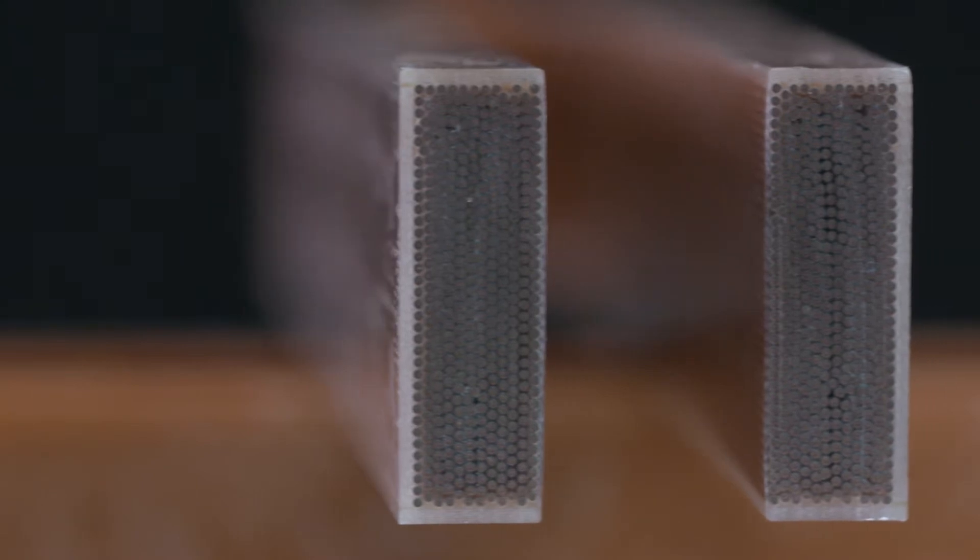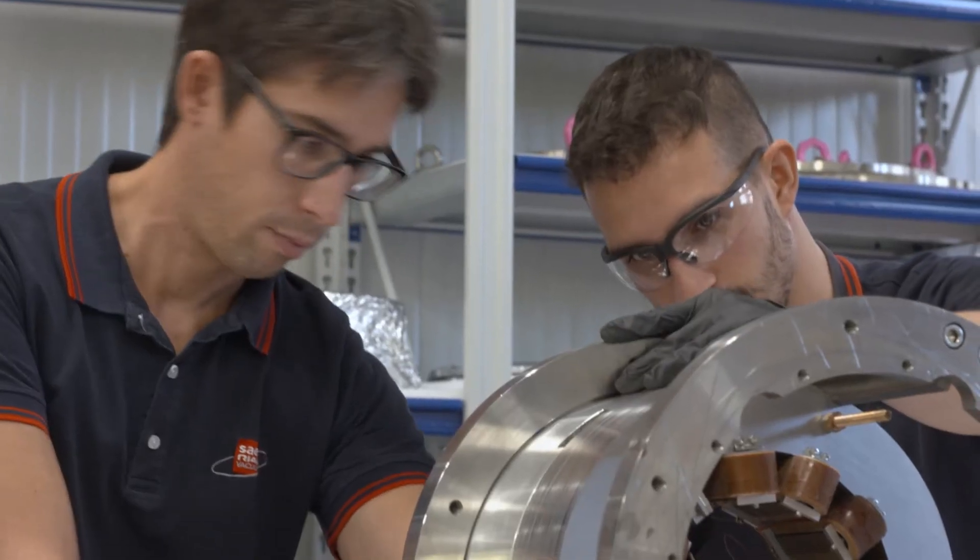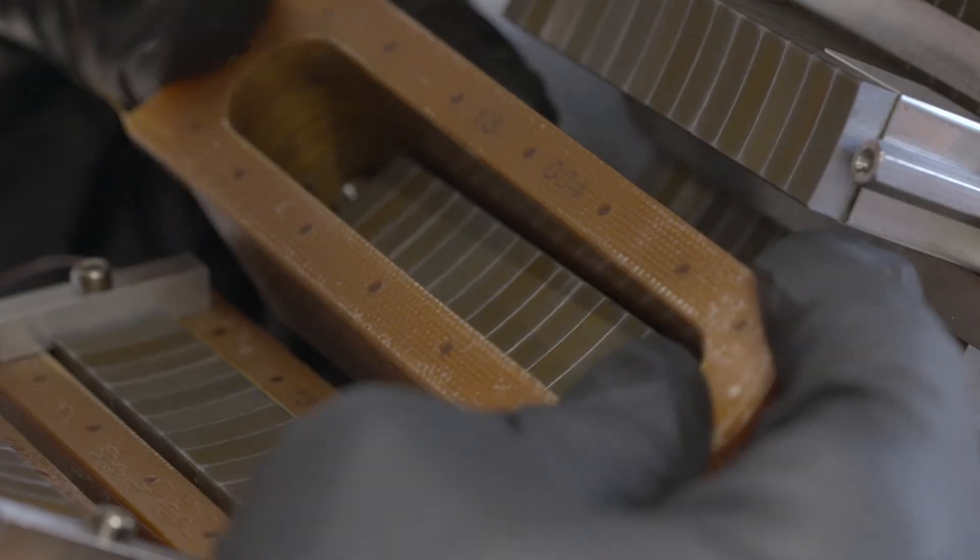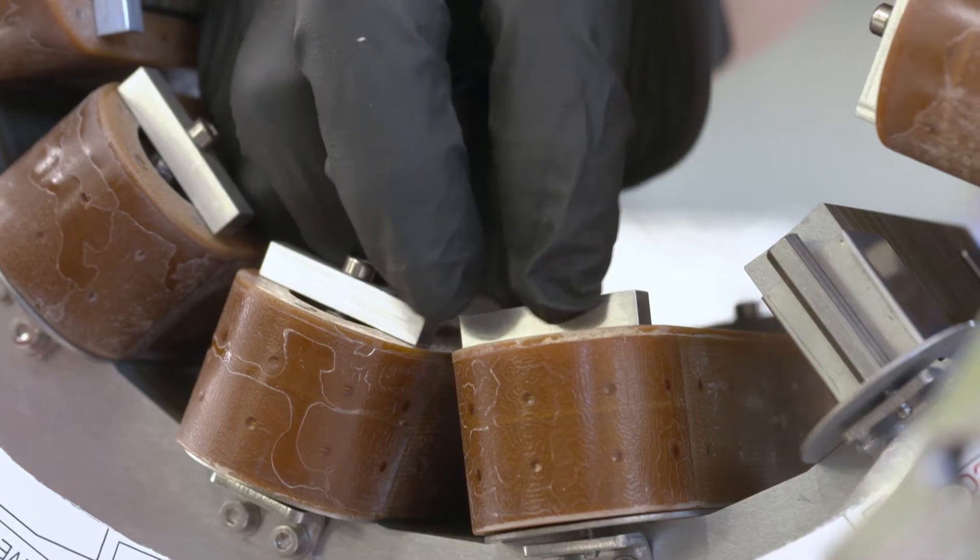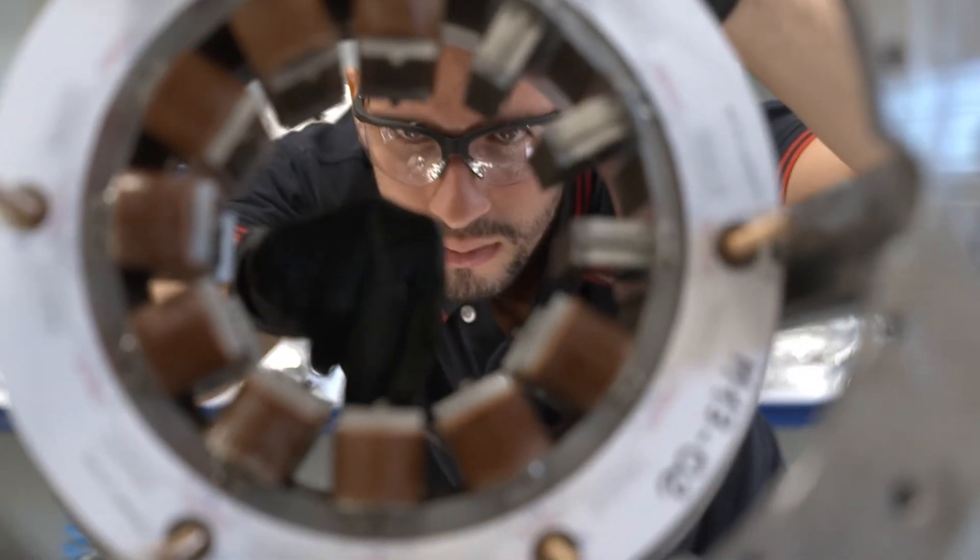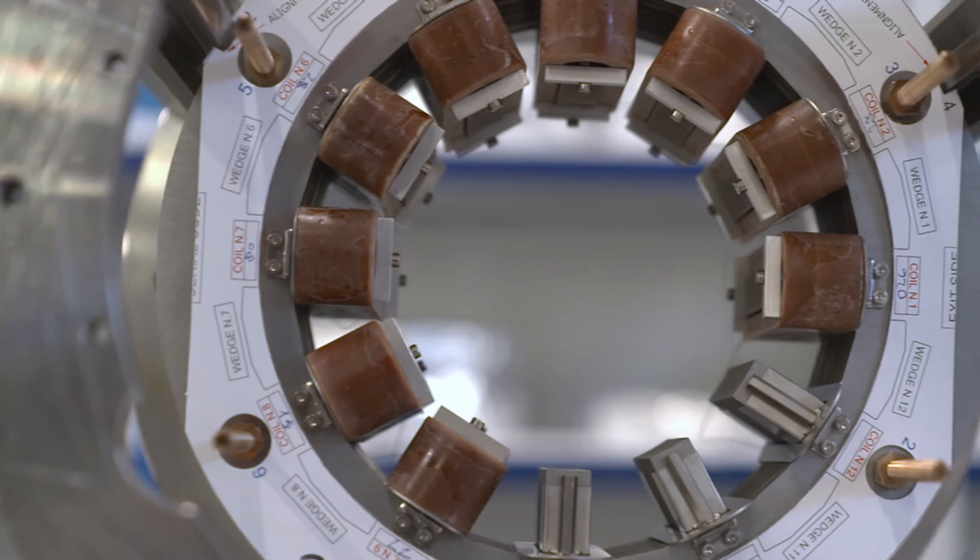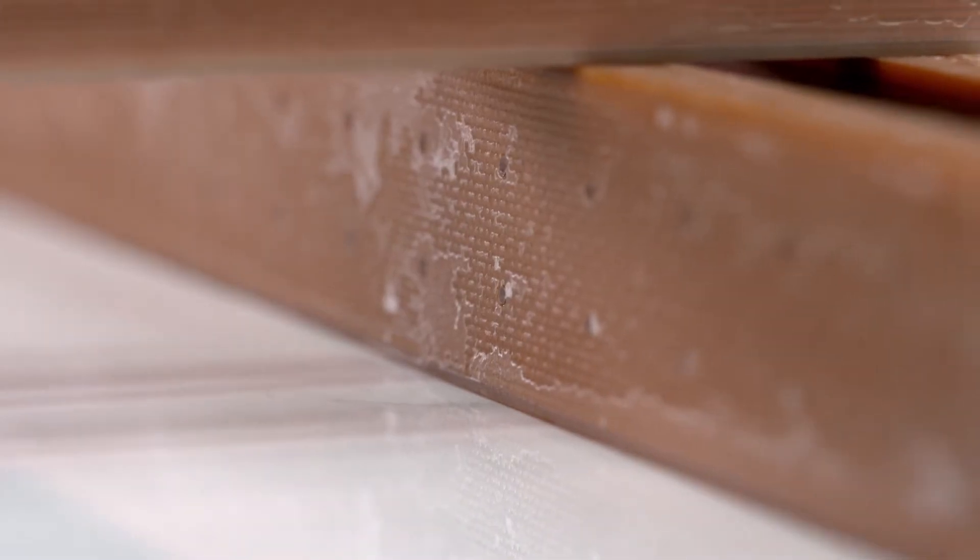Sais Real Vacuum won the tender to produce 54 corrector magnets for the HiLumi project at CERN in Geneva. The magnets, designed by INFN, are used to increase the brightness of the LHC accelerator.